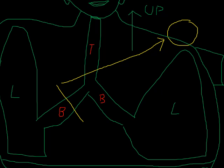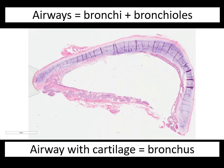Coming back to the branching diagram: the trachea branches into the two bronchi going to the two lungs. The yellow section I showed you corresponds to the next slide. That's what it looks like when you take a section, stain it with hematoxylin and eosin, and show it in histology or pathology. The most striking feature of a bronchus at low magnification is this purple structure in the wall — that is cartilage.